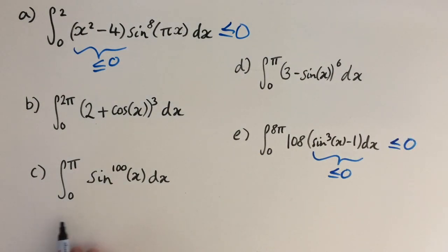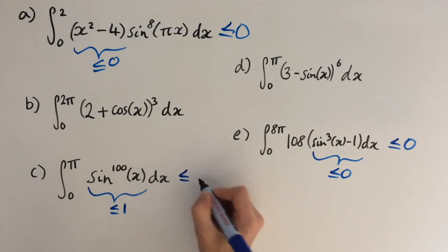Now let's look at integral c. This is a bit simpler. Sine to the power of 100 is always between 0 and 1, so we can bound this above by 1. And if we integrate 1 between the range of 0 and pi, we're just going to get pi. So we know that this integral is less than or equal to pi.